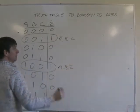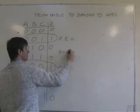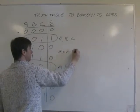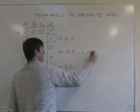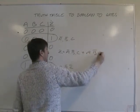The Boolean statement for the whole system is Z equals not A and not B and C, which is that term, or A and not B and not C.